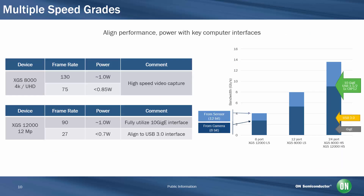The XGS8000 and XGS12000 are available in both color and monochrome configurations, as well as in speed grades that match the frame rate available from the image sensor to popular computer interfaces such as 10GigE or USB 3.0. This allows camera manufacturers to optimize the choice of components in a camera's bill of materials, helping to simplify development for different end use cases.